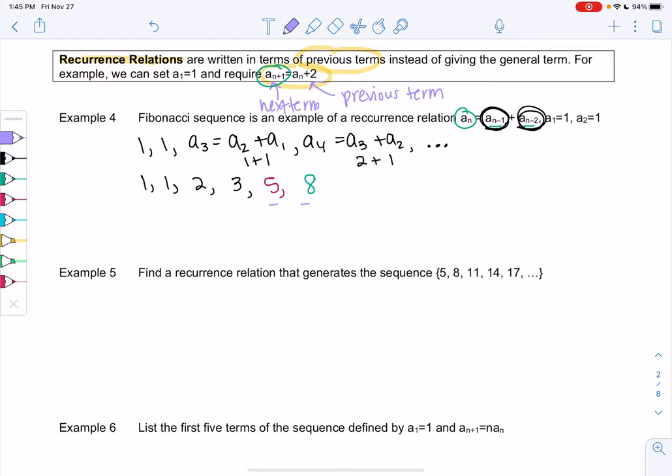Just adding the previous two terms. And then we get 5 plus 8, which is 13. We'll do just a couple more. So then the next one would be 8 plus 13, or 21. You're just adding the two terms before. It just keeps going and going. There is no nice general term here. There's only a recurrence relation.